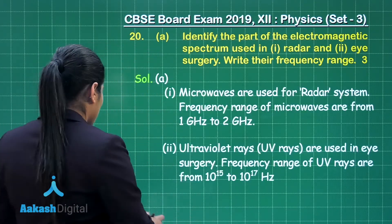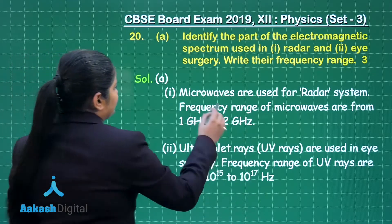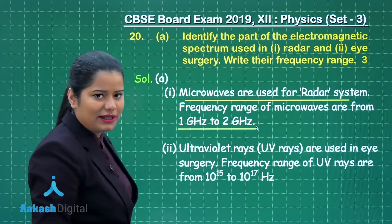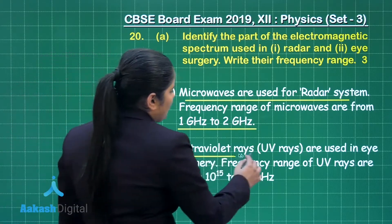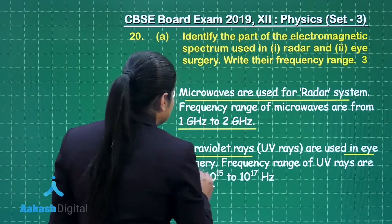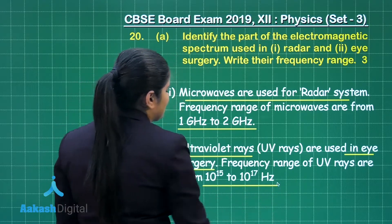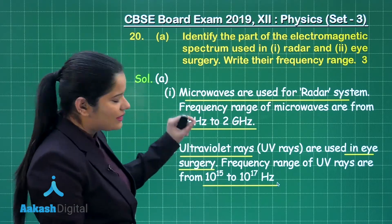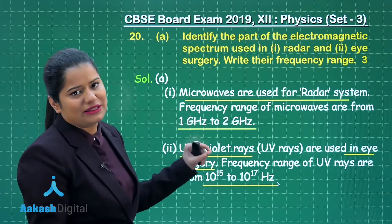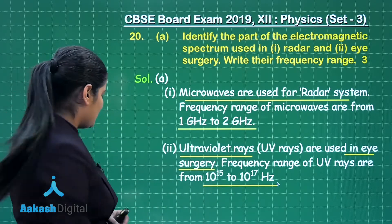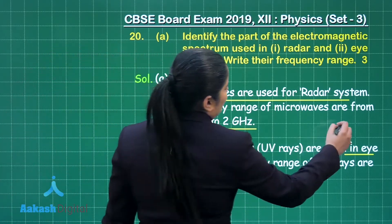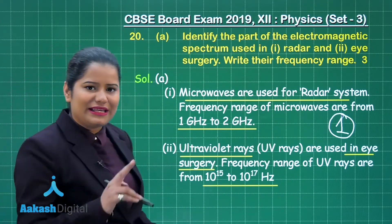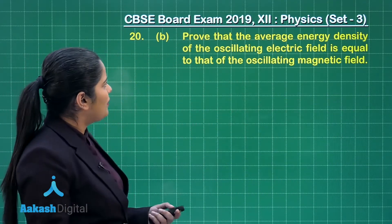Microwaves are used for radar systems and their frequency ranges from 1 gigahertz to 2 gigahertz, while ultraviolet rays are used in eye surgery and their range is 10 to the power 15 to 10 to the power 17 Hertz. If you have written only this much in the exam, you are going to score one mark completely for this part.